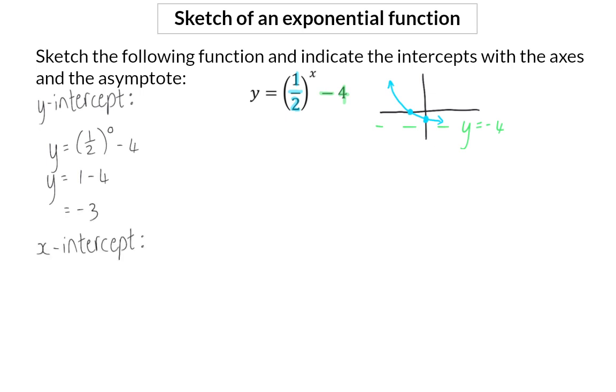For the x-intercept, I'm going to substitute the y-value in the equation with a 0, and now I need to solve for x in the exponent. So firstly, I'm going to add the minus 4 on the left, and now to solve the x in the exponent, I need to get the bases the same. To do that, I'm going to write both of them in prime numbers, so the left will be 2 to the power of 2, and on the right I have 2 to the power of minus 1. This means that minus x is equal to 2, which means that x is equal to minus 2.